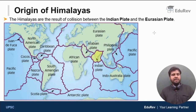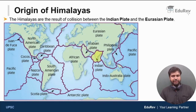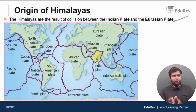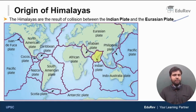The Himalayas are the result of collision between the Indian plate and the Eurasian plate. For you to understand the meaning of this, there are some topics we have to understand first, and then we can start discussing about the origin of Himalayas.